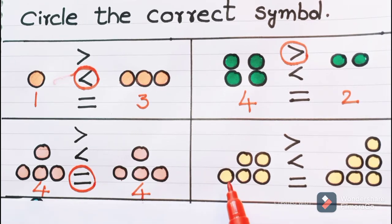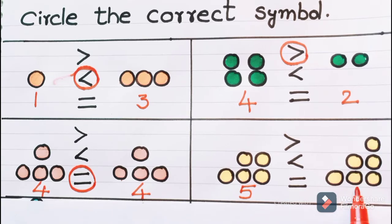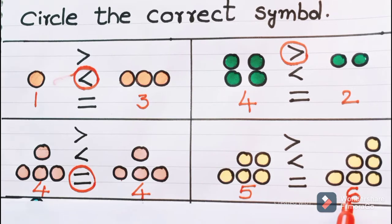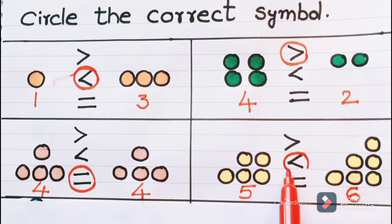Now look at here. How many circles do we have? One, two, three, four, five — there are five circles. And how many are here? One, two, three, four, five, six — there are six circles. So we are comparing the number five with the number six. When comparing with the number six, five is smaller than six. Five is the smaller number and six is the bigger number. For smaller numbers, we will use less than symbol. Five is less than six.